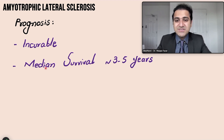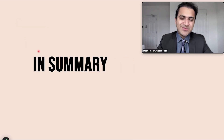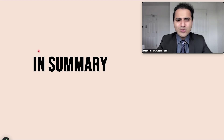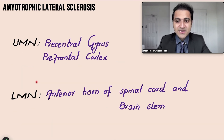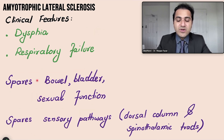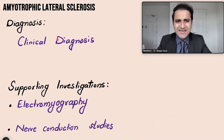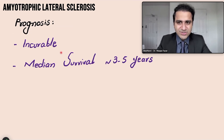ALS is an incurable disease. The median survival is usually three to five years, though a few patients can survive longer; the majority have a poor prognosis. In summary: ALS, also called Lou Gehrig disease, involves both upper and lower motor neurons; SOD1 mutation is key; bulbar palsy is lower motor neuron and pseudobulbar palsy is upper motor neuron; it spares bowel, bladder, sexual function, and sensory pathways — that is why it is called motor neuron disease. It is a clinical diagnosis and riluzole is the only drug to remember. Regular PFTs and monitoring are essential.